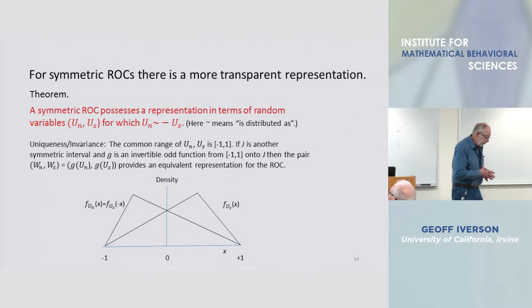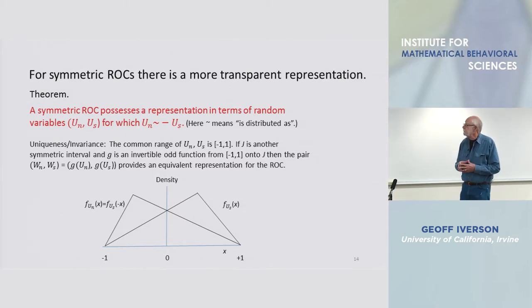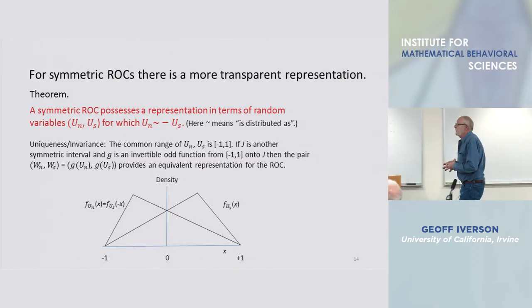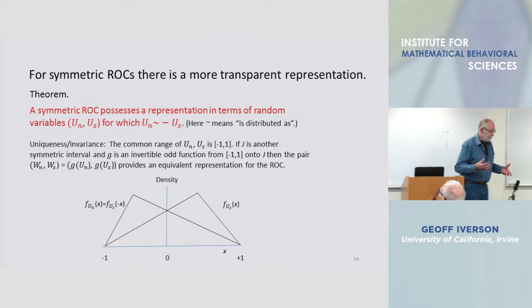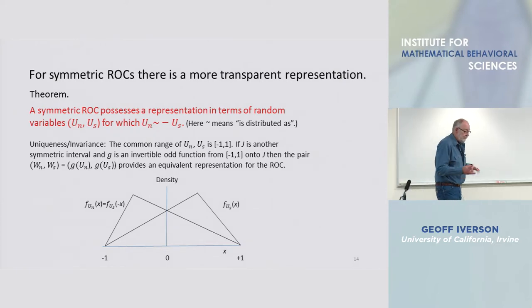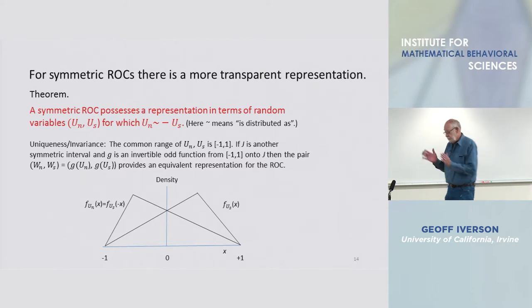The symmetric ROC always possesses a representation in terms of random variables for which signal and noise components, their distributions, are related via a minus sign.